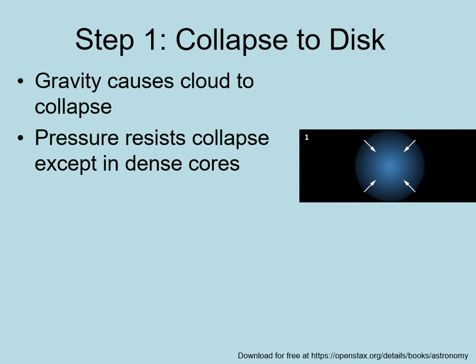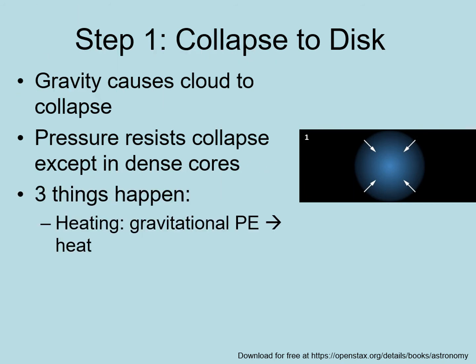Once collapse starts, it tends to accelerate — as parts of the cloud core get closer to each other, the gravitational pull gets stronger, so they fall towards each other more quickly. A cloud core can be up to a light year across and will collapse down to a star that is 10 million times smaller. As it contracts, three things happen. First, it will heat up, converting gravitational potential energy into kinetic energy, which the random motions of gas atoms then turn into heat.